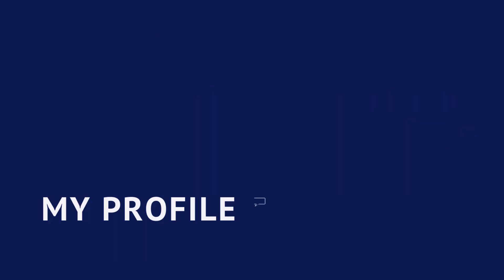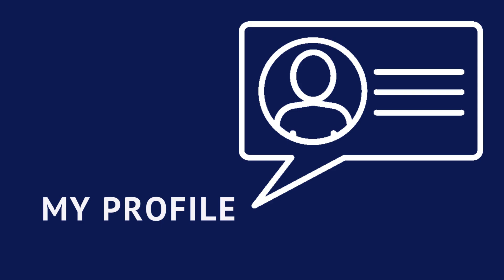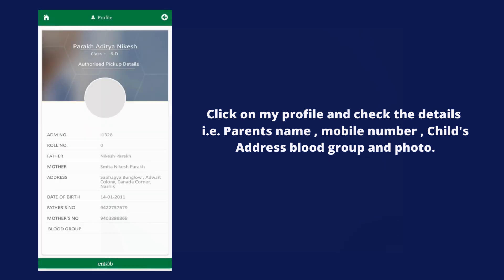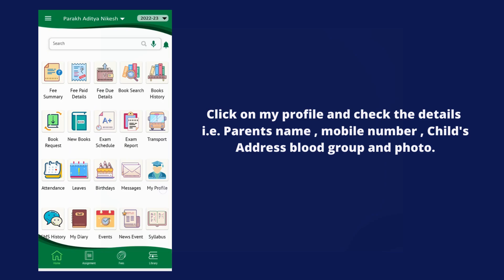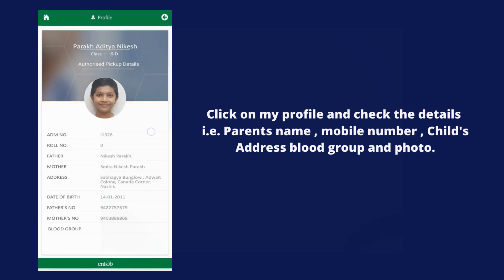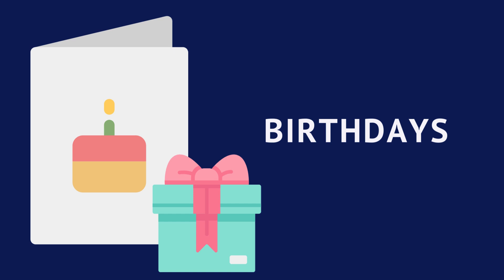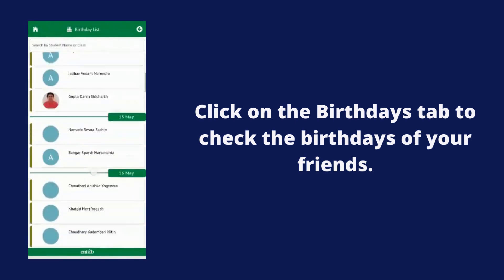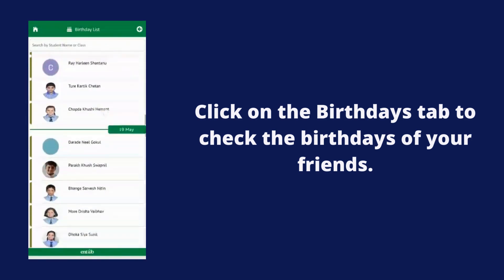Now let's check your profile in the My Profile tab. Once you click on My Profile, check the details — that is, the parent's name, mobile number, address, blood group, and the child's photograph. You can also scroll through the Birthdays tab to check your friends' birthdays.